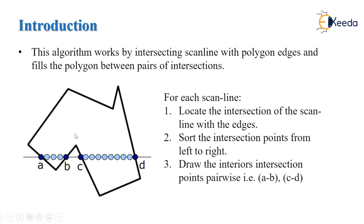Let's see this figure. As the figure shows, we have located the intersection of the scanline with the edges. We draw a scanline from outside the polygon passing through it. Then we sort the intersection points from left to right — that is A, B, C, and D — and make pairs of those intersection points: AB and CD.